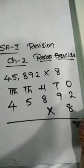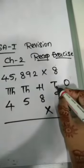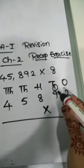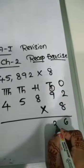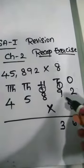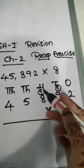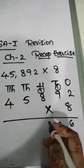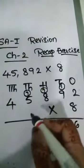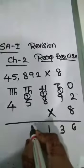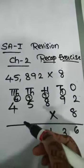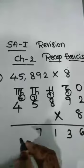So 8 times 2 is 16, 6 here, 1 carry here. 8 times 9 is 72, plus 1 is 73, so 3 here, 7 carry here. 8 times 8 is 64, plus 7 is 71, so 1 here, again 7 carry here. 8 times 5 is 40, plus 7 is 47, so 7 here, 4 carry here. 8 times 4 is 32, plus 4 is 36.